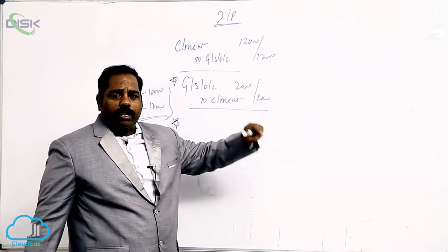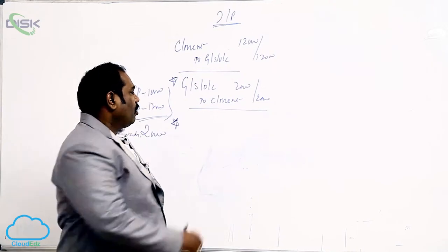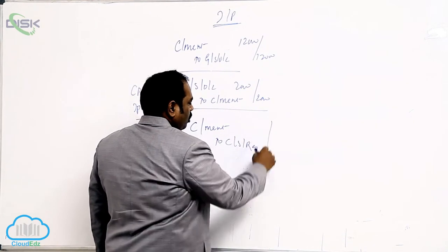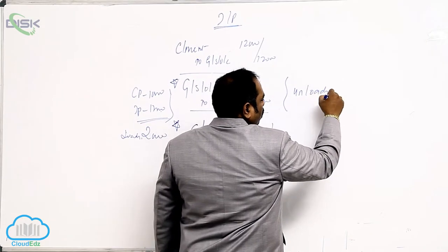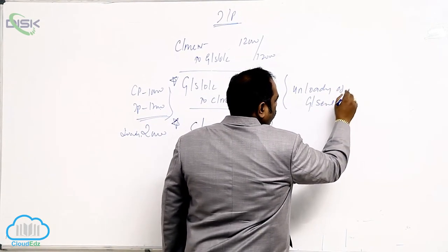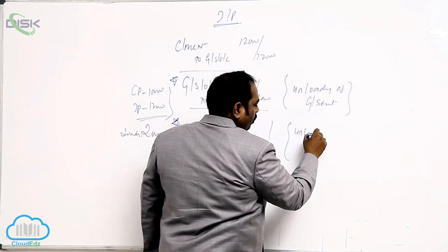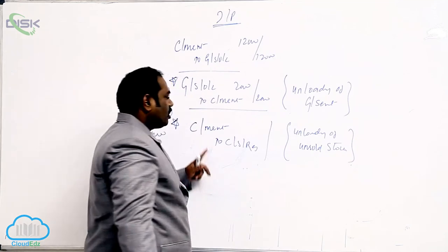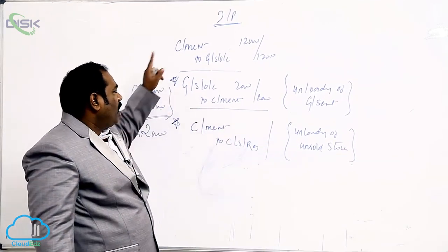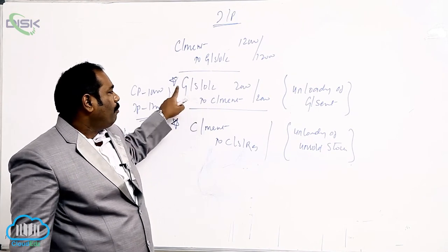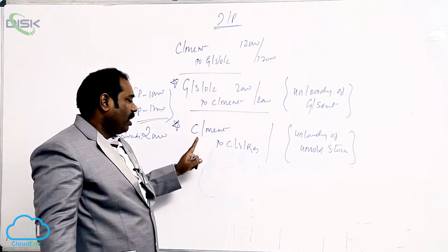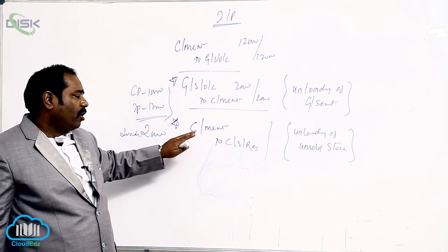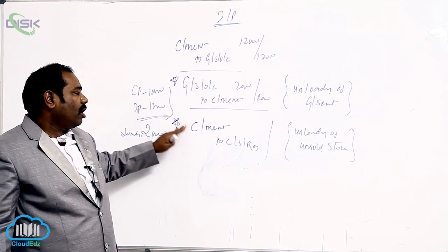The entry for unsold stock is: Consignment Stock Account debit to Consignment. For unloading it, we pass: Consignment Account debit to Consignment Stock Reserve. The first additional entry is for unloading of goods sent; the second is for unloading of unsold stock. Remember, this entry will not come when there is no unsold stock. Whenever unsold stock is valued at invoice price, we need to pass Consignment Account debit to Consignment Stock Reserve.